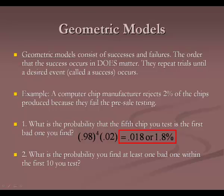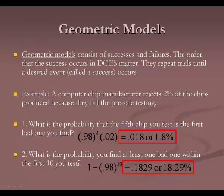What is the probability that we find at least one bad chip within the first ten tested? This is an 'at least' problem, so we go backwards and do one minus the opposite. The opposite means none of them are bad, which is 0.98 to the tenth power. One minus 0.98 to the tenth gives 0.1829, or 18.29%.